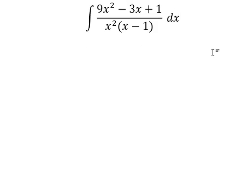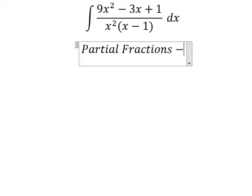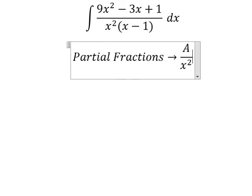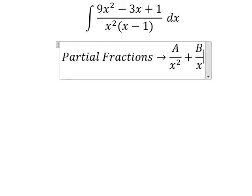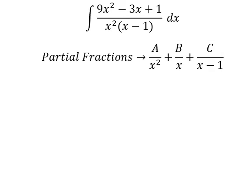Next, we can use partial fractions. So I will put capital A over x², capital B over x, and capital C over x minus 1. Next, we do common denominator.